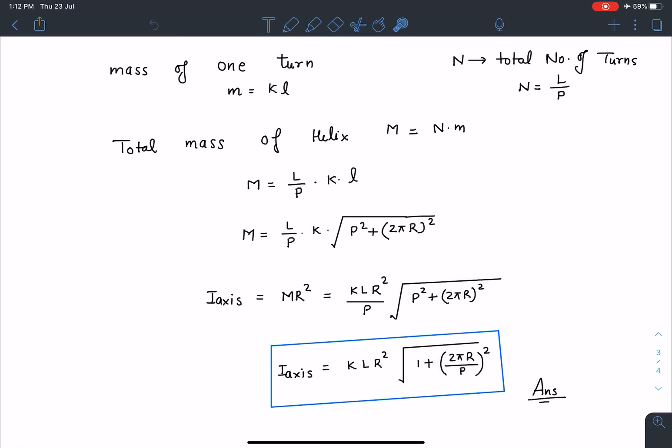If I substitute this mass in the moment of inertia equation, which is MR², I'll be getting KLR²/P × √(p² + (2πR)²). You can leave your answer here itself or further you can simplify.